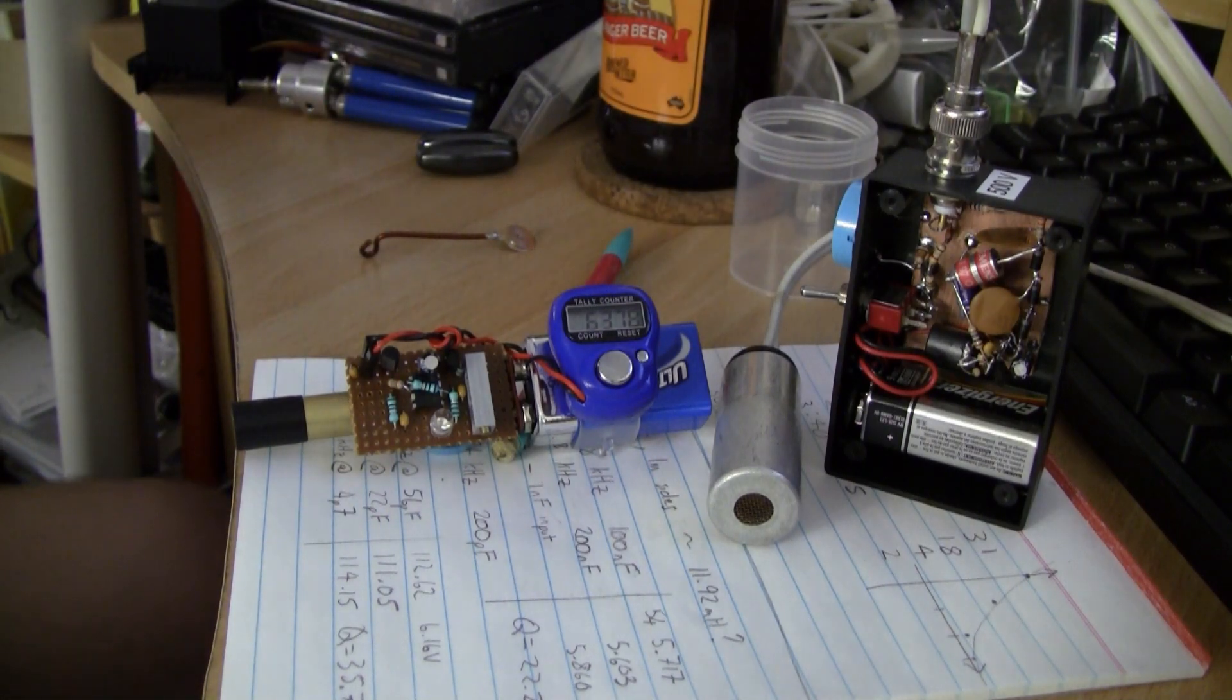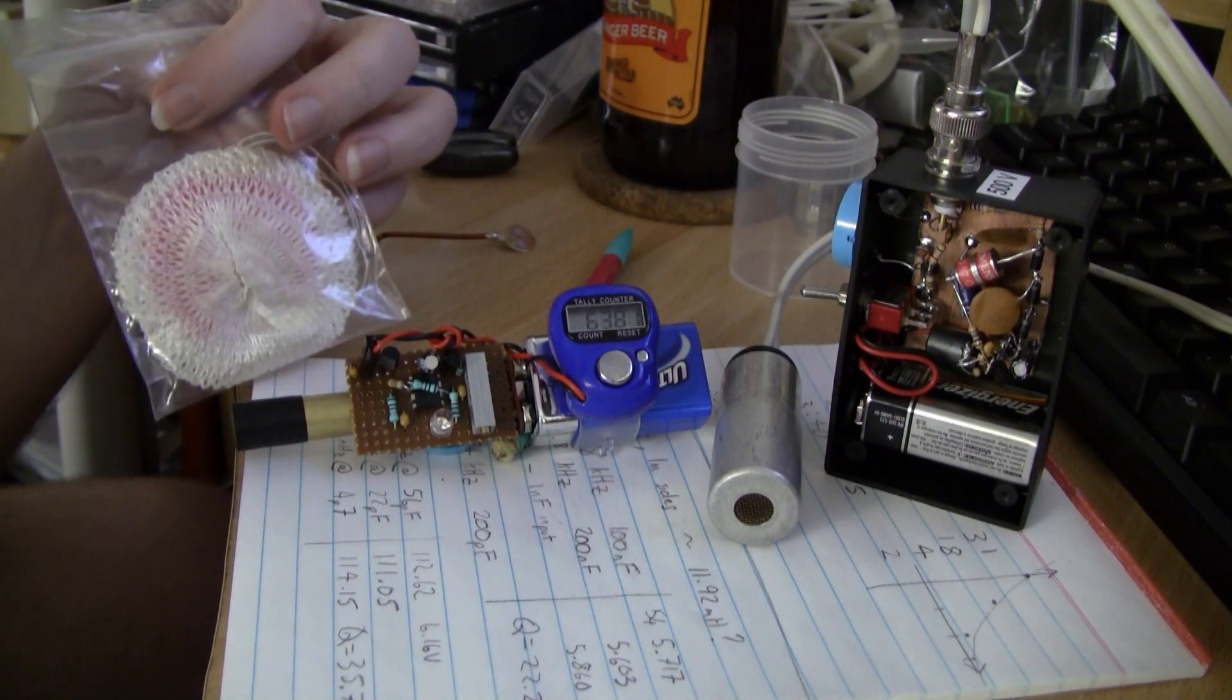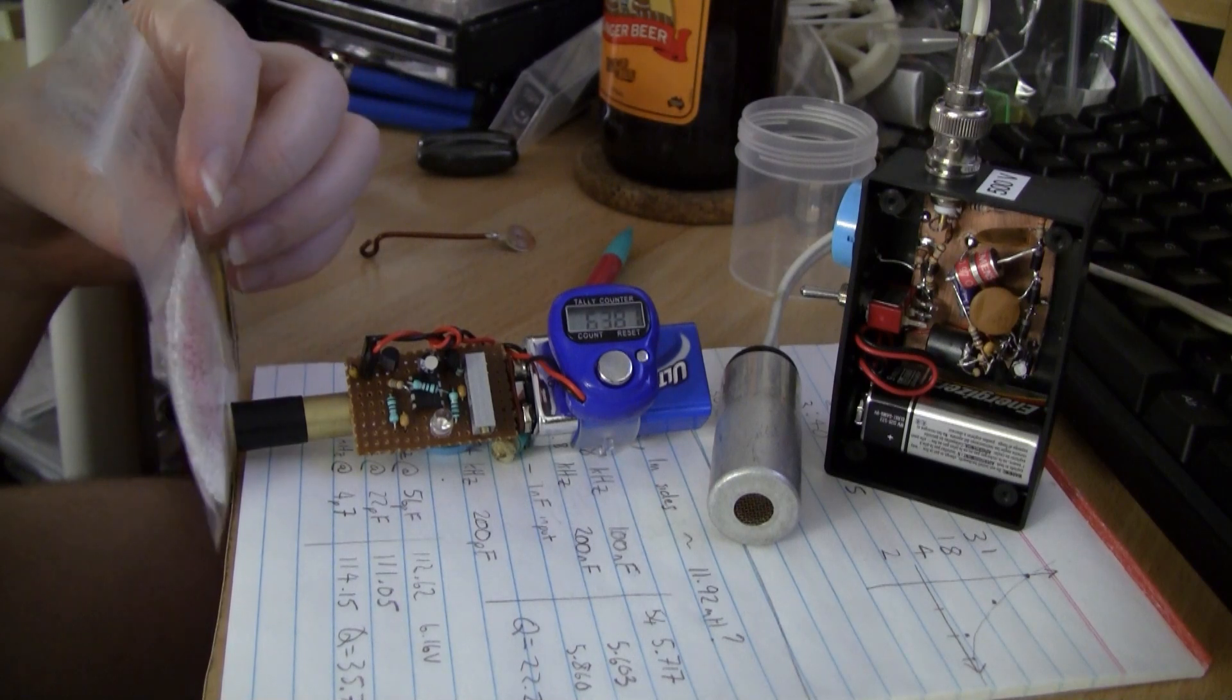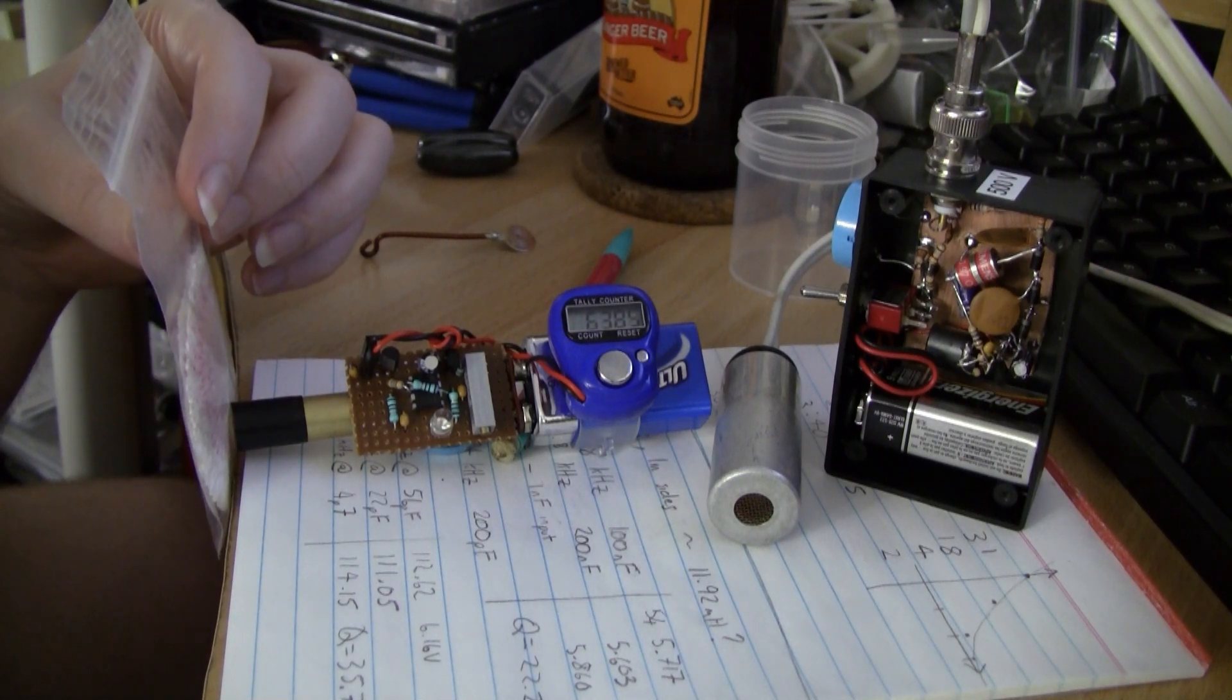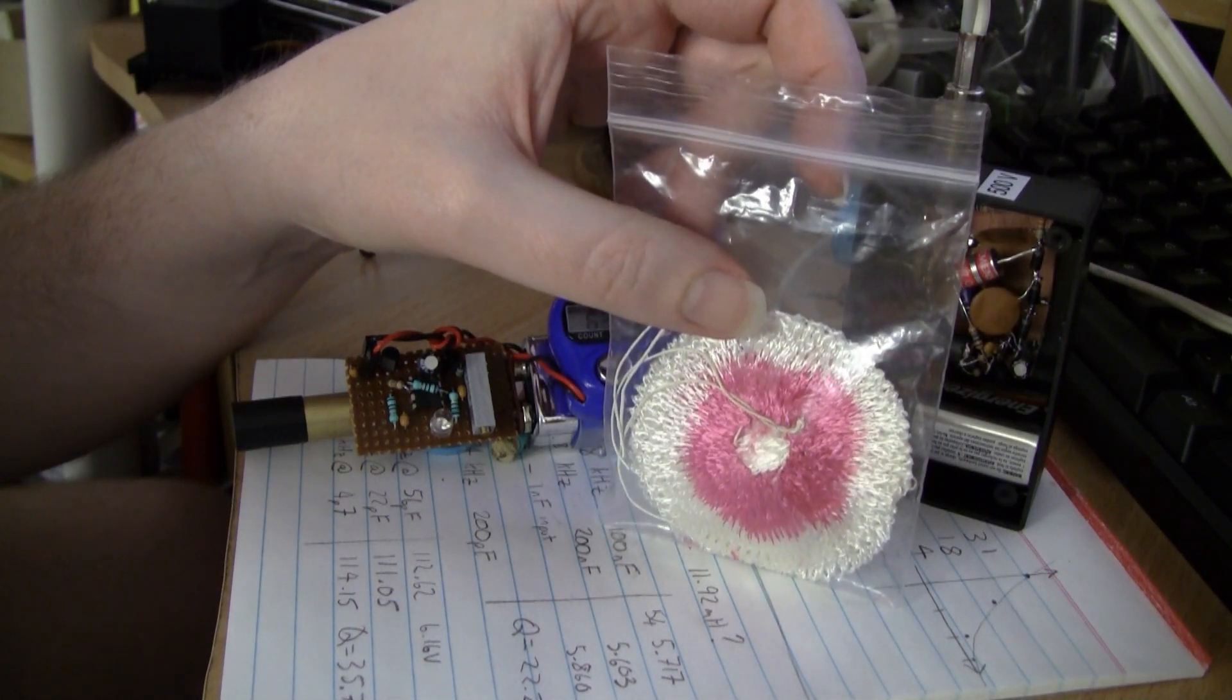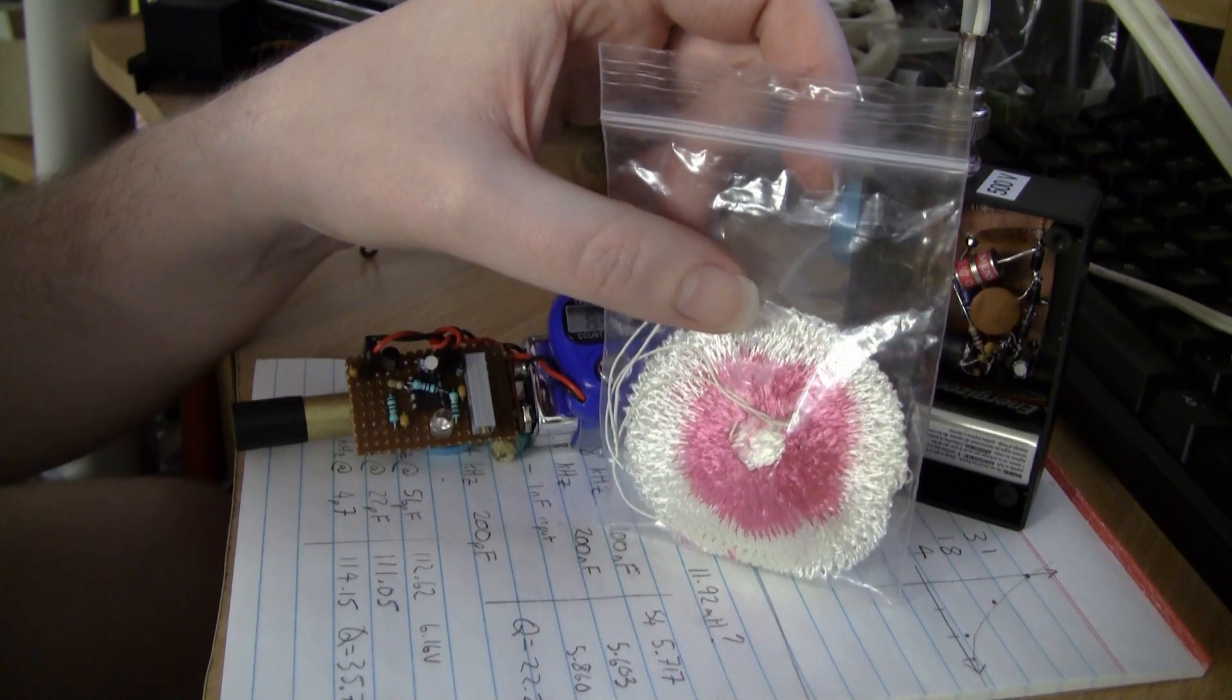Let's try a slightly stronger source. This is your old mantles, thoriated lantern mantles. For comparison purposes, it's an extended source, so it's not really a fair comparison.